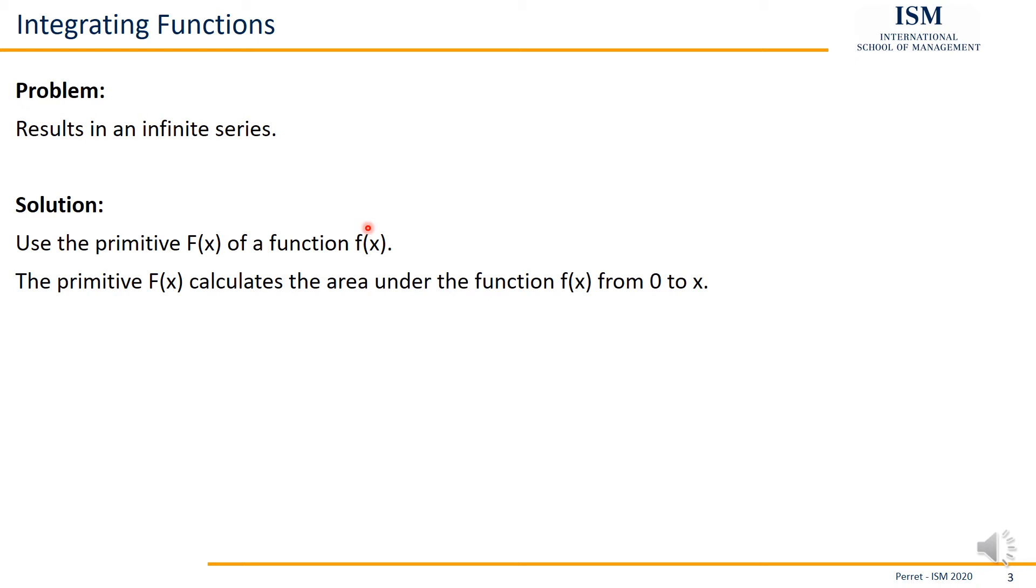The geometrical interpretation states that the primitive F(x) calculates the area under the function small f(x) from 0 to x. So we always get the area starting at 0 until this x.